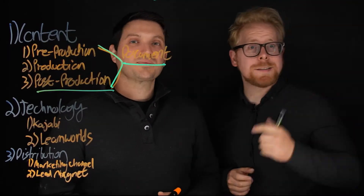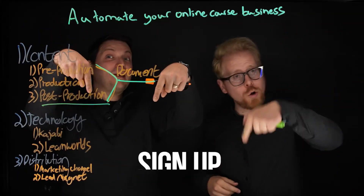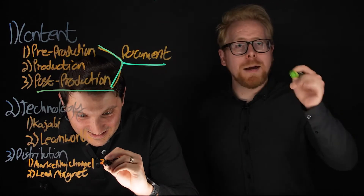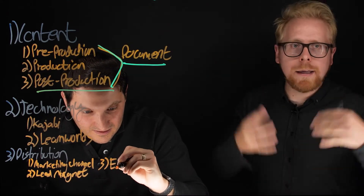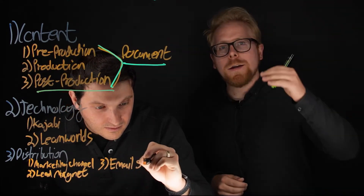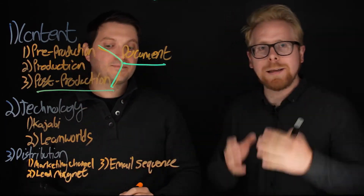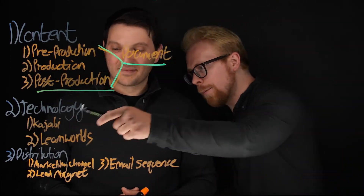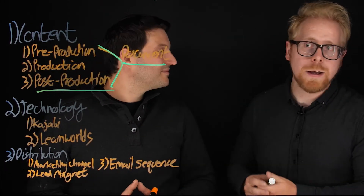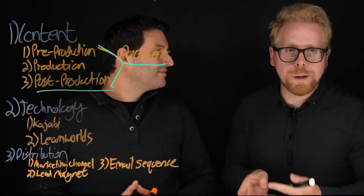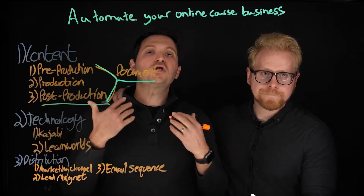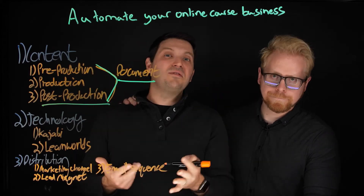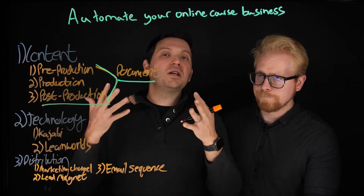All you really need is one really good lead magnet. Our free masterclass is a great example of one. Number three is an automated email sequence. Once you build out the email sequence, all you really have to do is read the data that Kajabi and LearnWorlds provide and make tweaks. Email sequences are so powerful because they essentially act as your sales individuals.